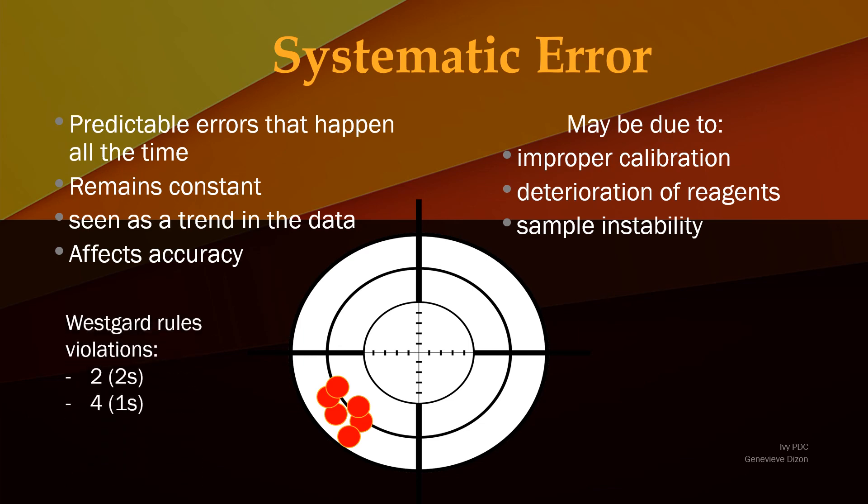All the Westgard rules that indicate trends identify systematic errors. Examples are 2-2s and 4-1s. Again, systematic errors give poor accuracy, they have a definite cause, and they are reproducible.